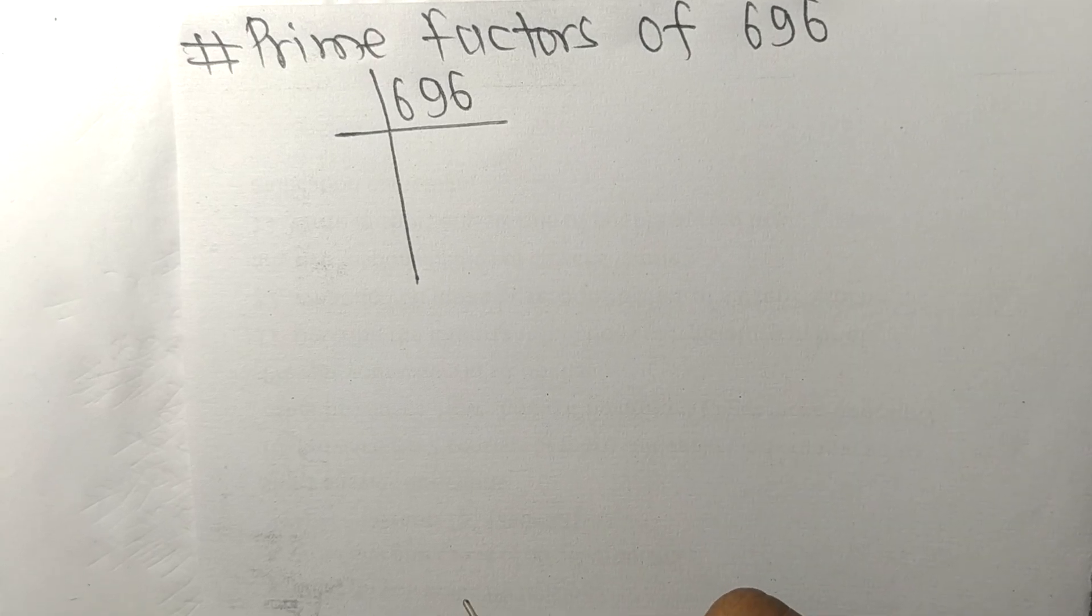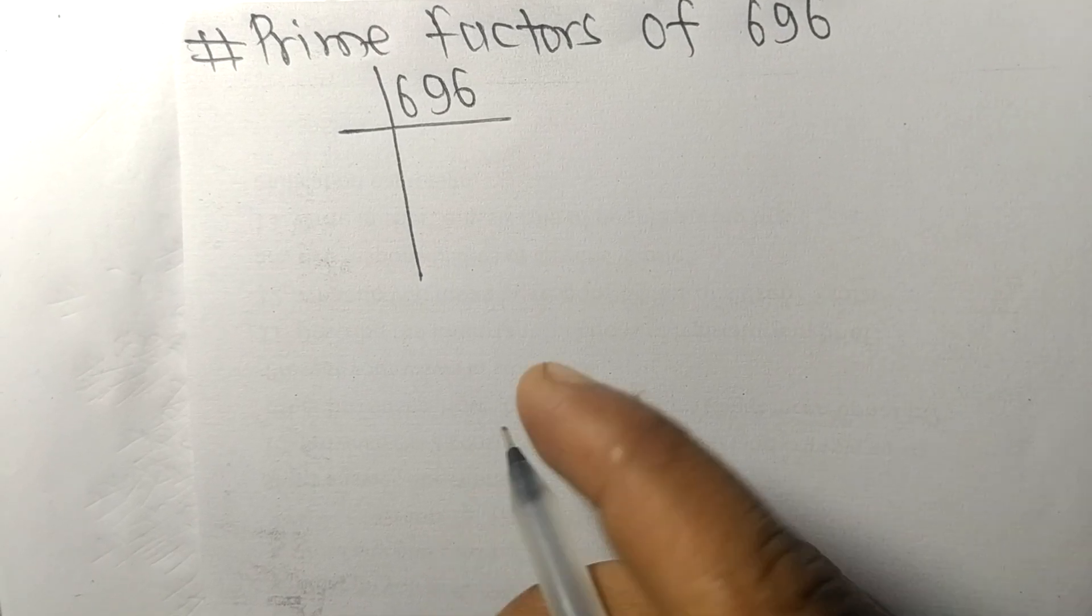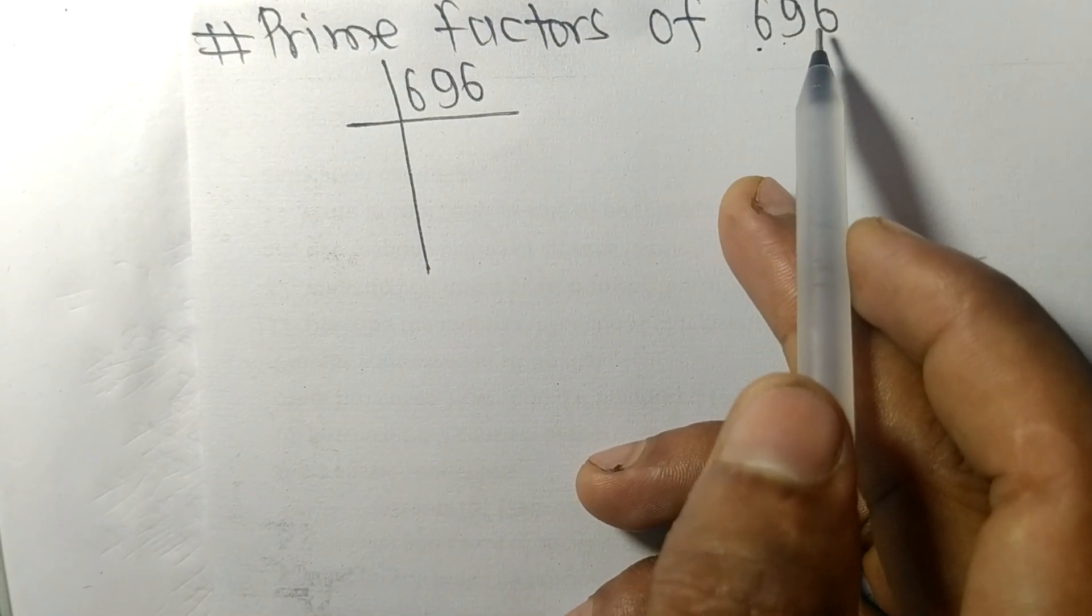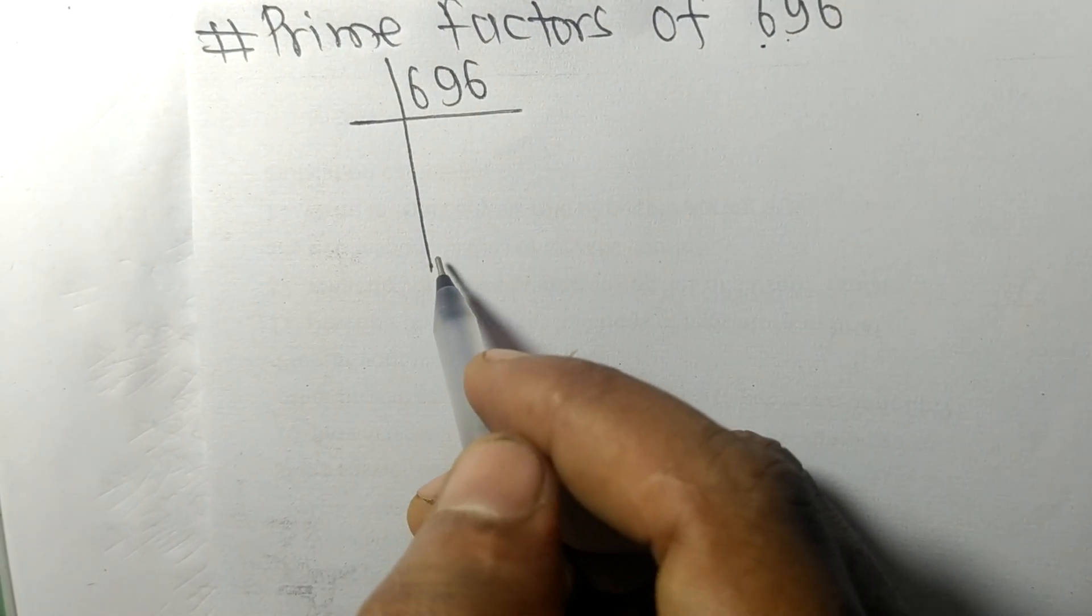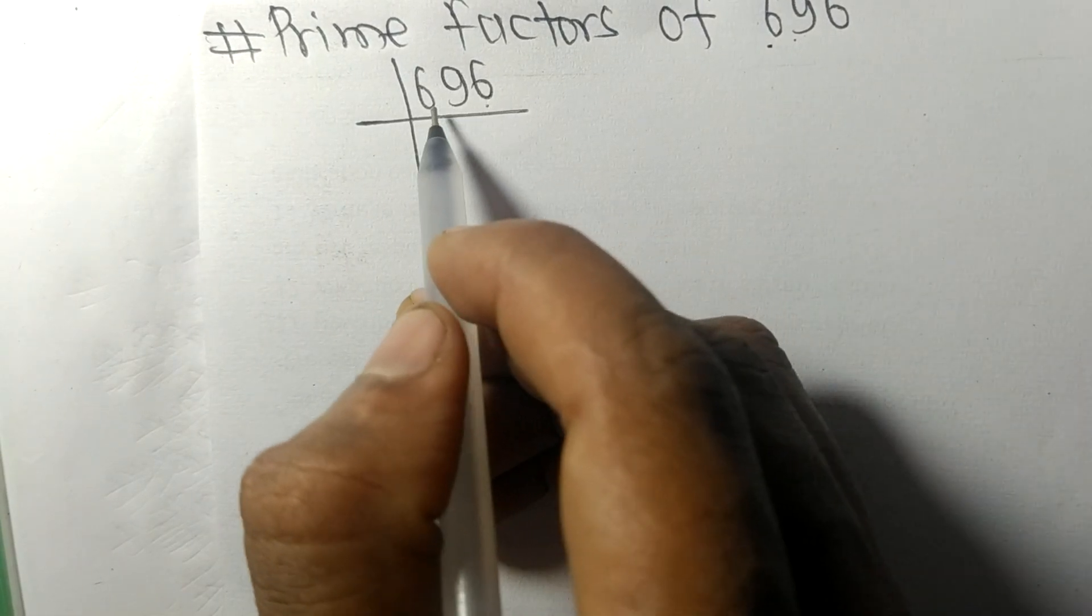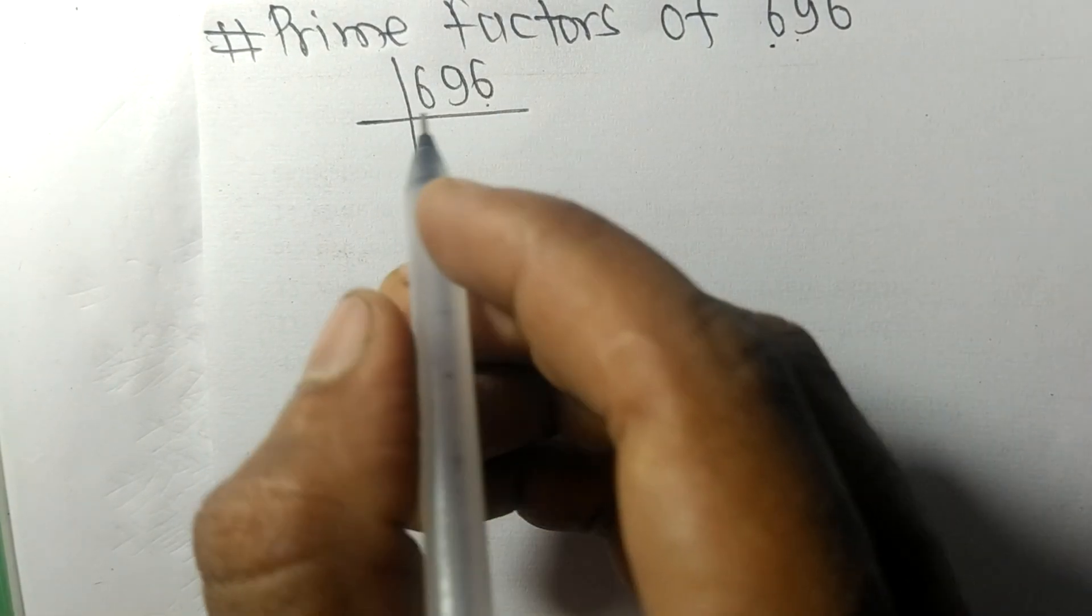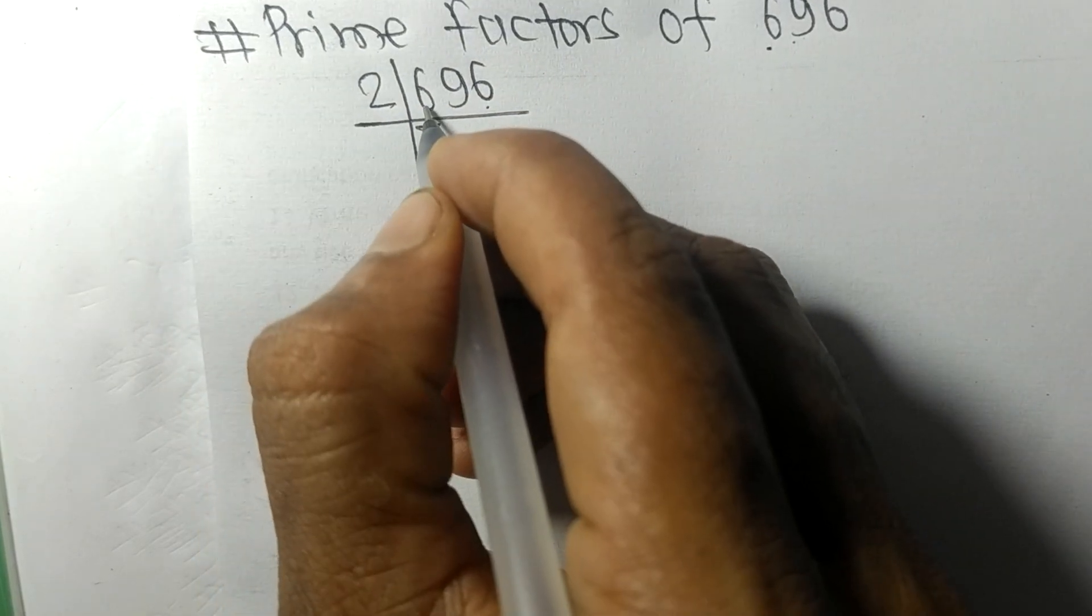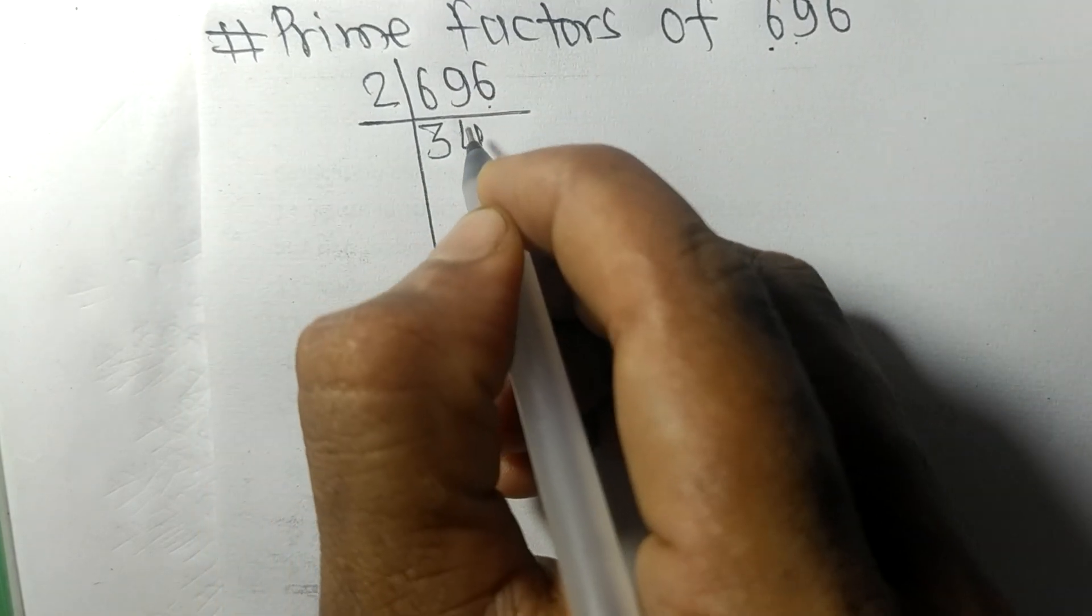Today in this video we shall learn to find the prime factors of 696. At last it contains an even number 6, so this whole number is divisible by 2. 2 times 3 equals 6, 2 times 4 equals 8 remainder 1 and 6, 16, 2 times 8 equals 16.